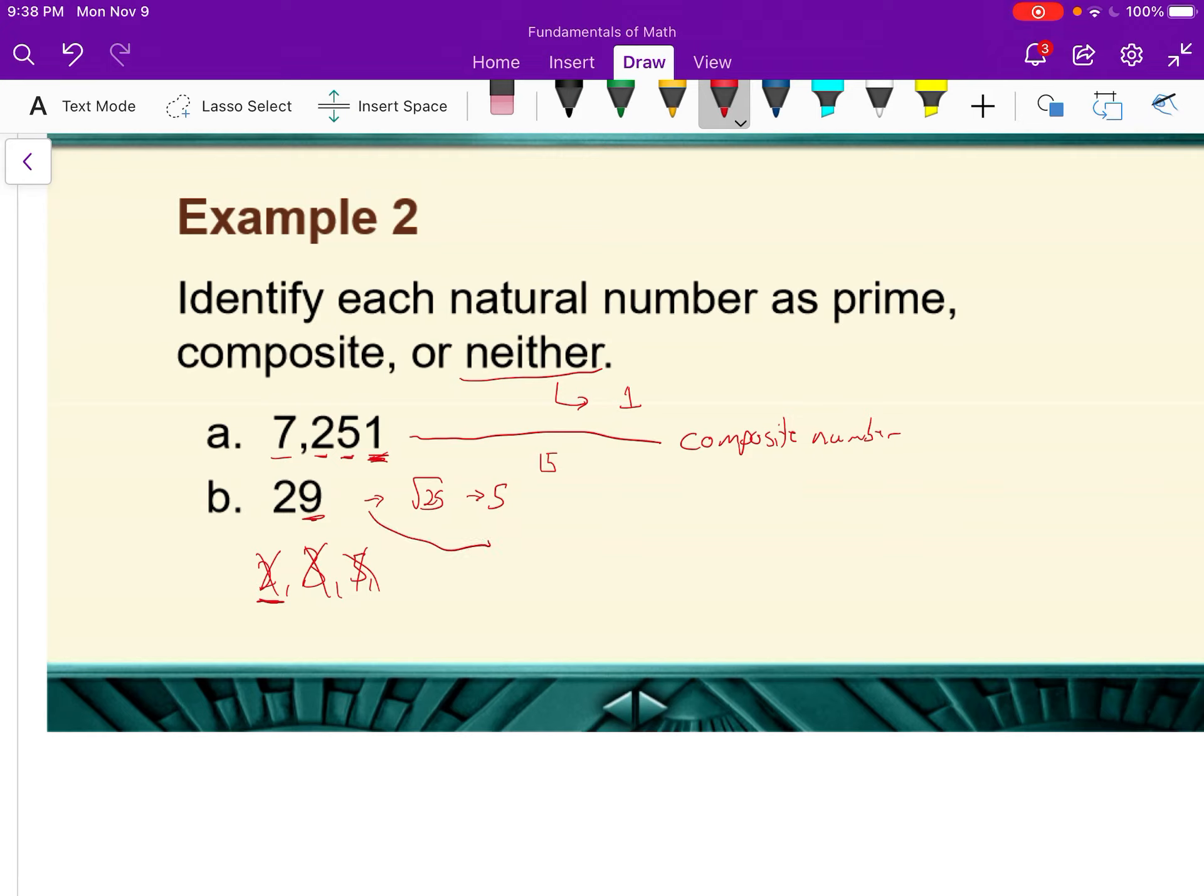So we checked up to 5. There were no prime numbers that went into 29, I'm sorry. So 29 is a prime number.